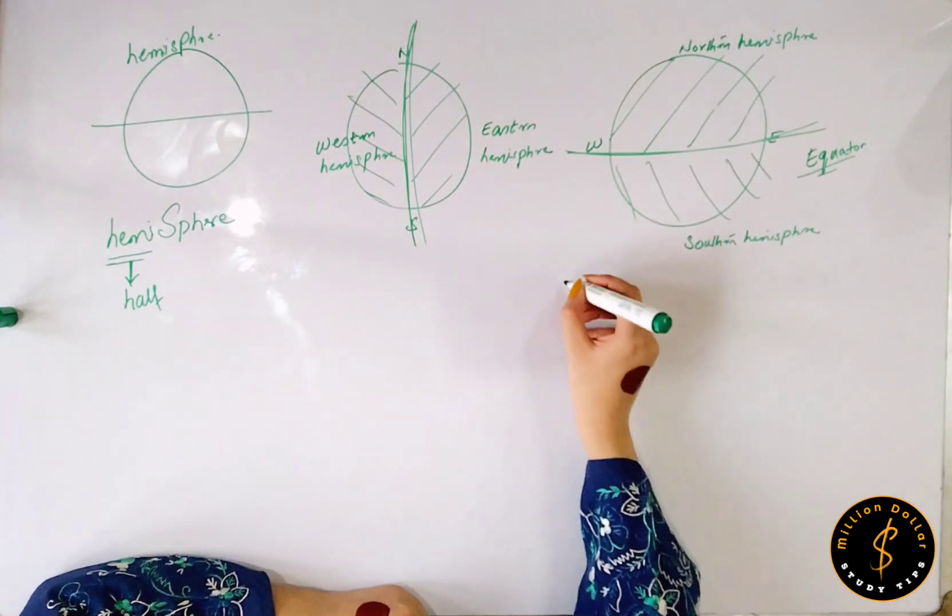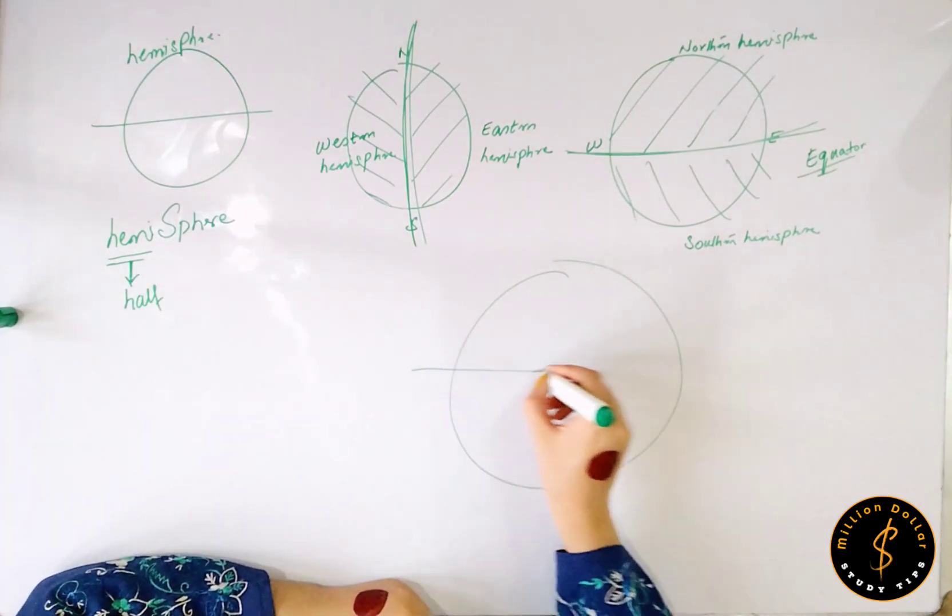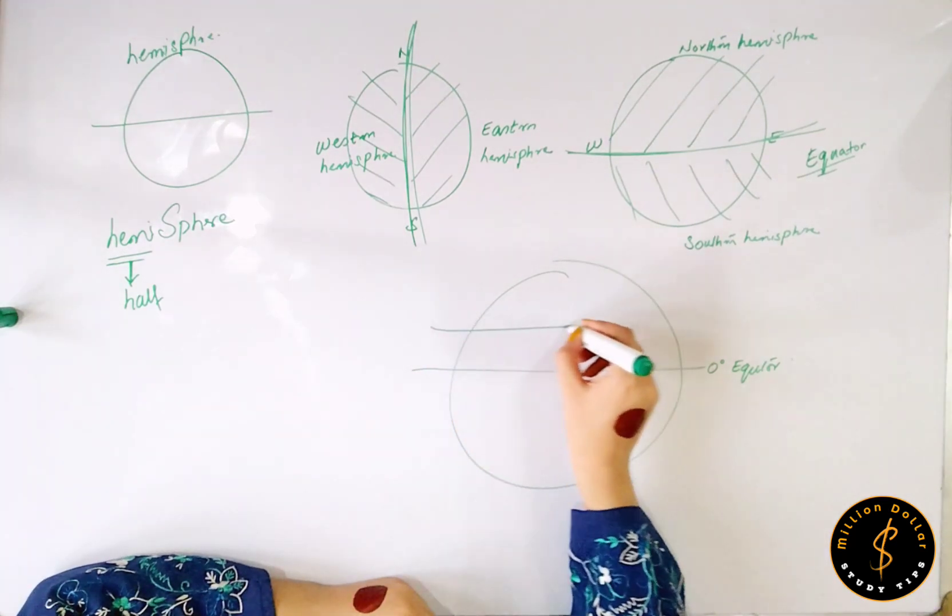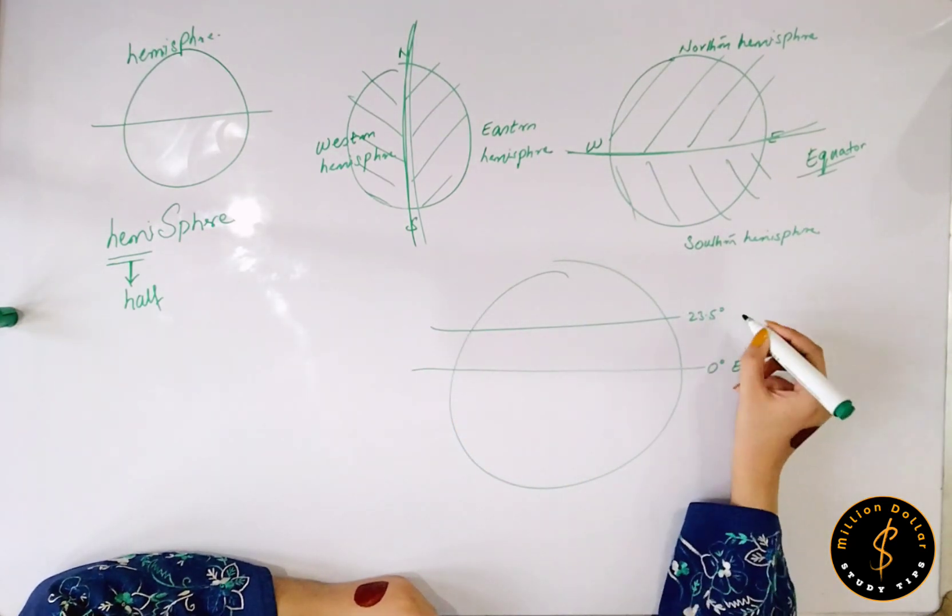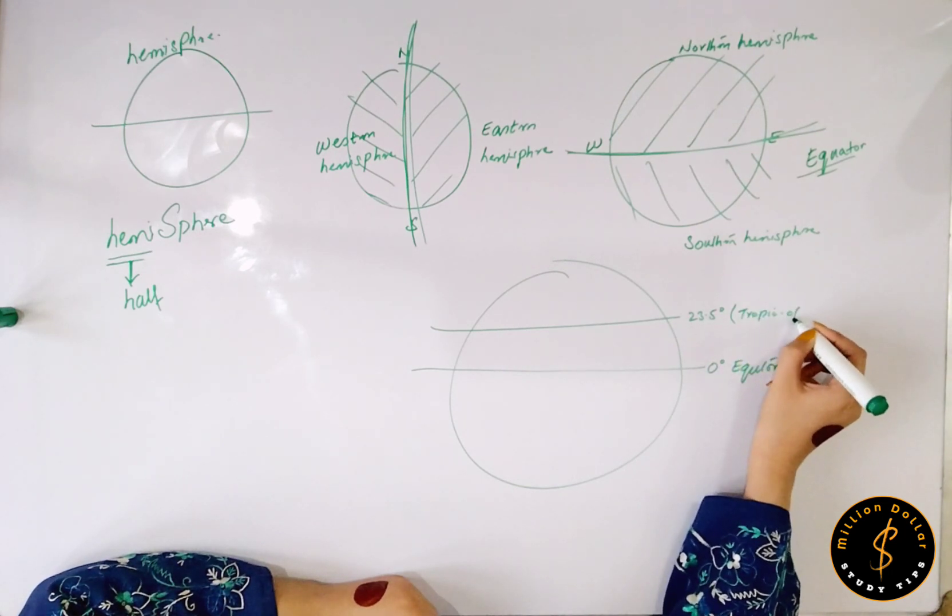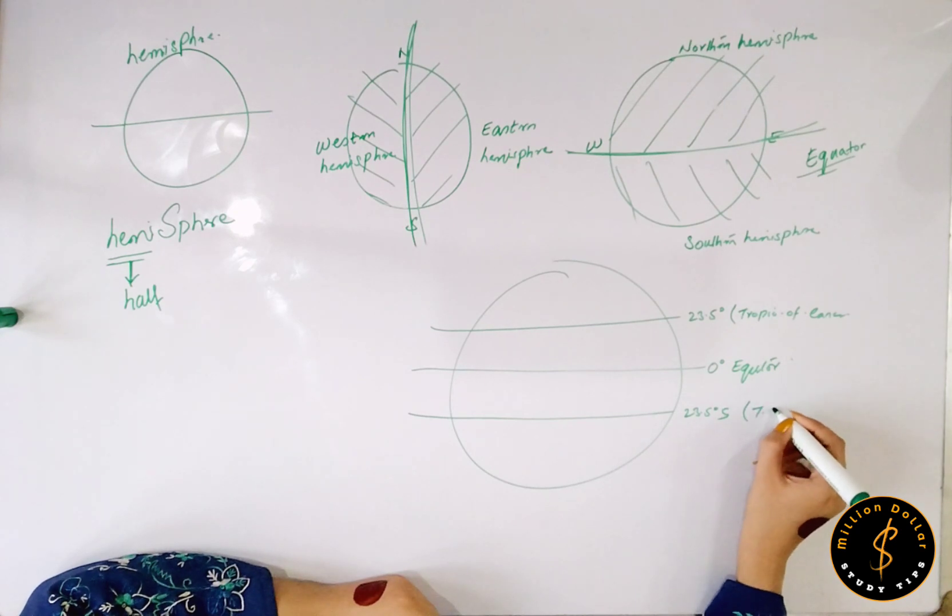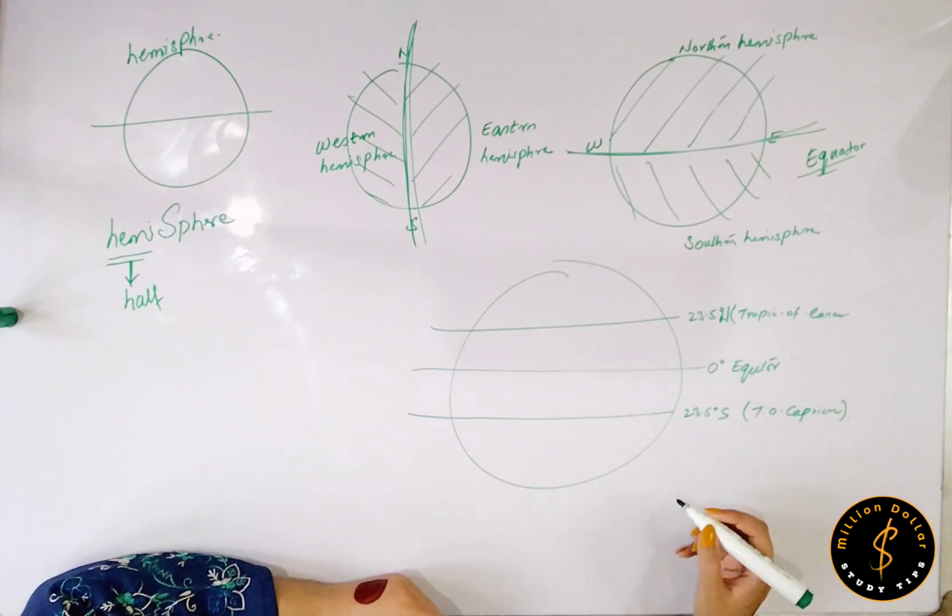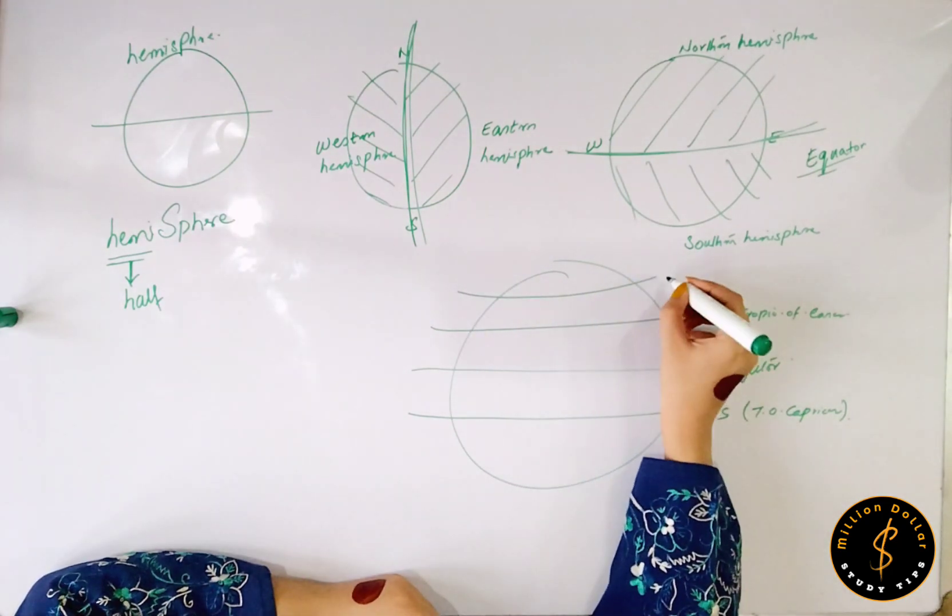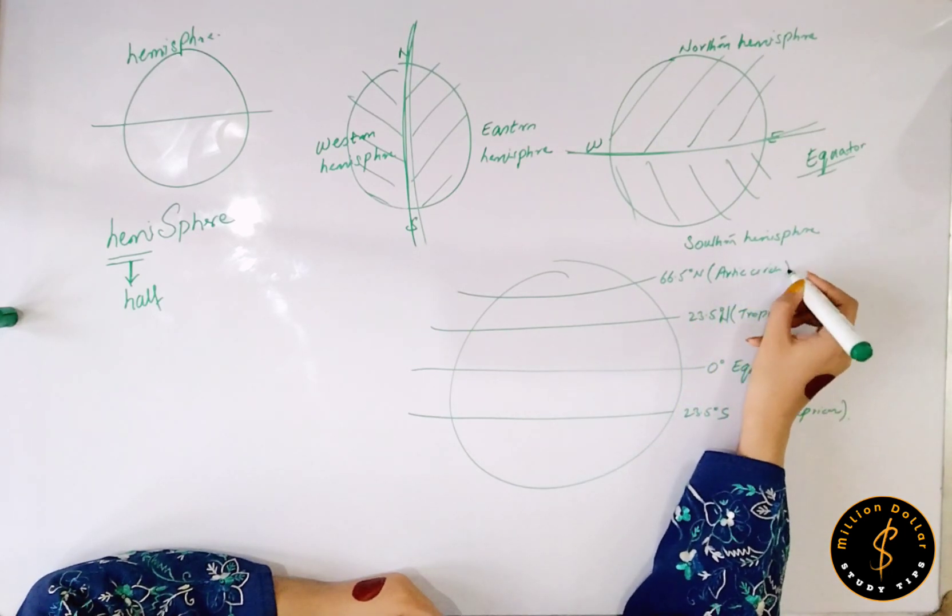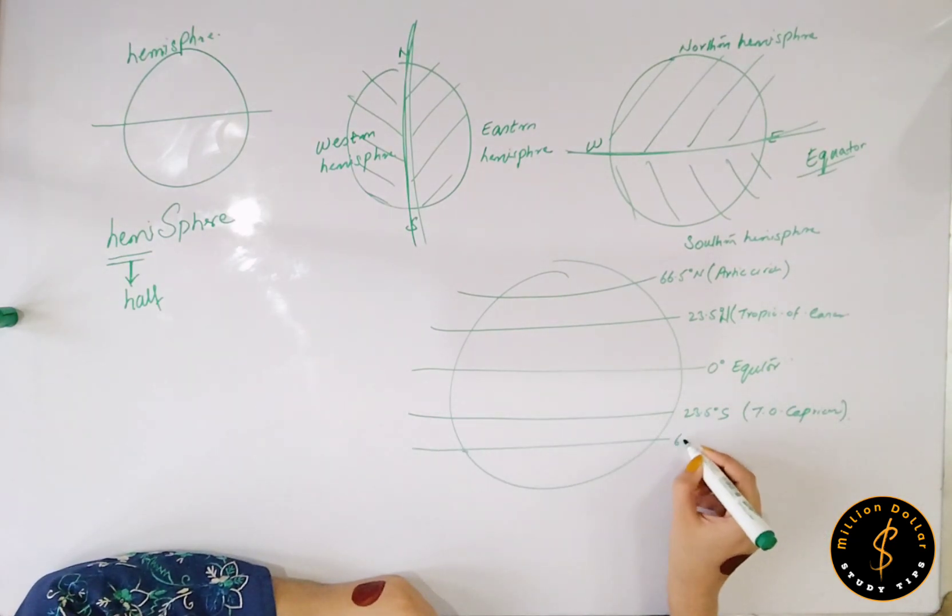Let's divide your planet Earth into climatic zones. Here we have equator right at zero degree. This is your equator. Here we have Tropic of Cancer at 23.5 degree north. And right at 23.5 degree south we have Tropic of Capricorn. At 66.5 degree north we have Arctic Circle, and right at 66.5 degree south we have Antarctic Circle.